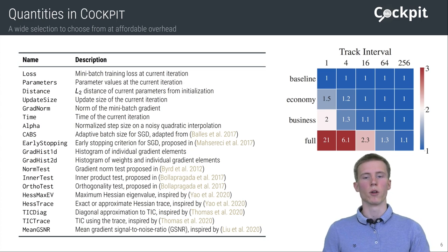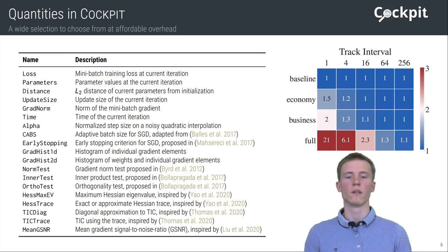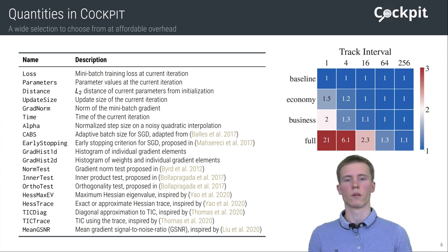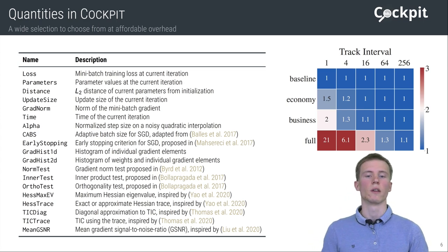In the paper, we motivate that this list of quantities is a good starting point to explore the internals of neural networks. And the code is open source and allows other quantities to be added to further enrich Cockpit in the future as well.